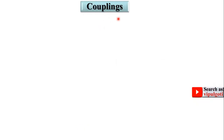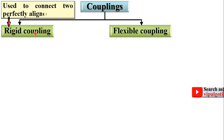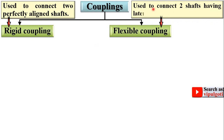Now, the classification of couplings. Couplings are broadly classified into two categories: rigid coupling and flexible coupling. Rigid coupling is used to connect two perfectly aligned shafts, whereas flexible coupling is used to connect two shafts having lateral and angular misalignment.